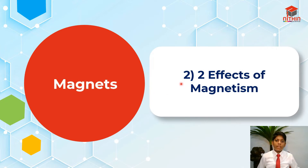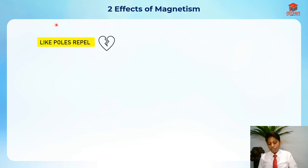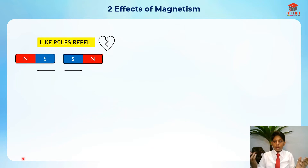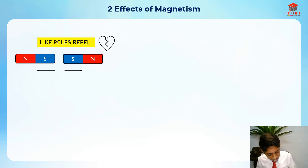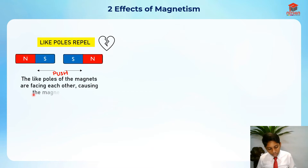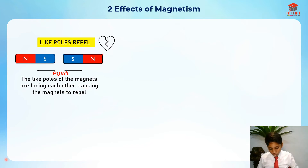For the second segment of this video I'm going to discuss two effects of magnetism. First, you need to know that like poles repel. Like poles are basically the same pole — so a south pole and south pole, when you think they are going to attract, they actually don't. They actually push each other away, so there's a push force. The like poles of magnets are facing each other, causing the magnets to repel.